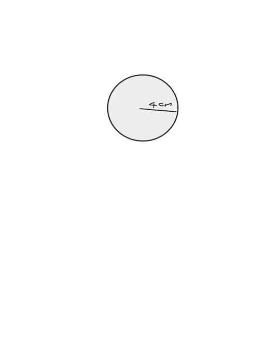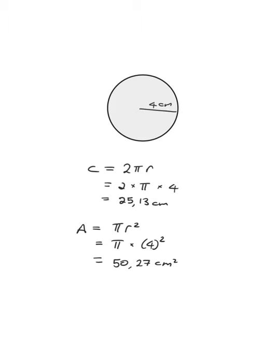Now quickly try this one for yourself: work out the circumference and the area of a circle that has a radius of 4 centimeters. Pause the video and try it for yourself. For the circumference: 2 × π × r, put that into your calculator, and you get 25.13 centimeters. For the area: π × r² with radius 4, put that in the calculator and you get 50.27 centimeters squared.